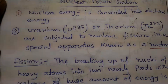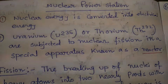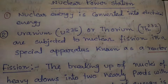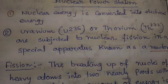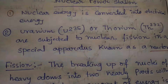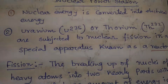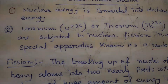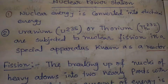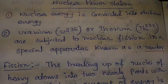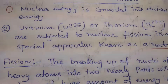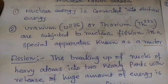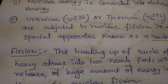Today, our discussing topic is Nuclear Power Station. A generating station in which the nuclear energy is converted into electrical energy is known as Nuclear Power Station. Here we use uranium U-235 and thorium TH-232, which are subjected to nuclear fission in a special apparatus known as a reactor.